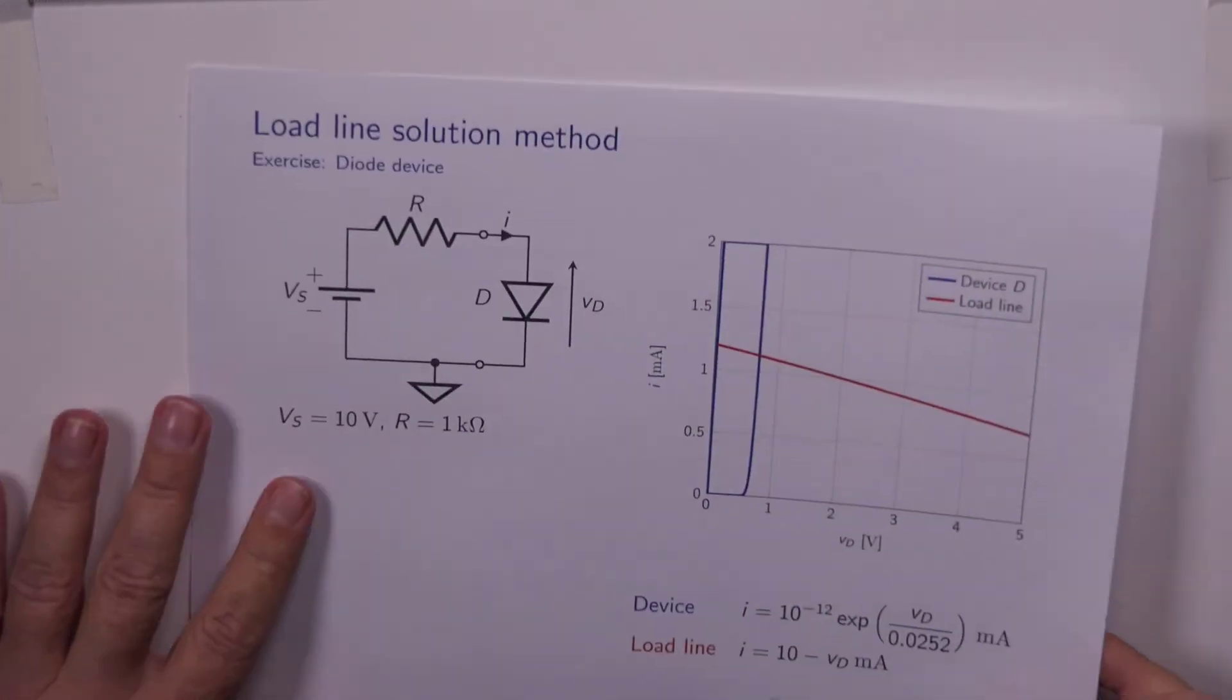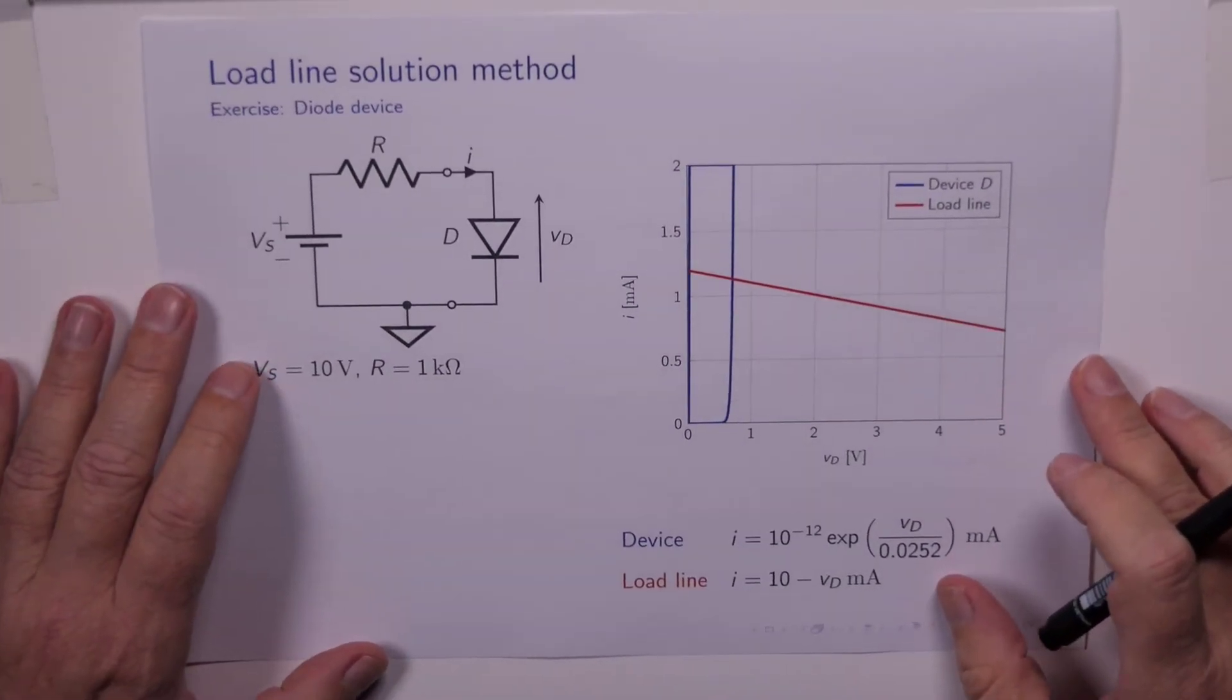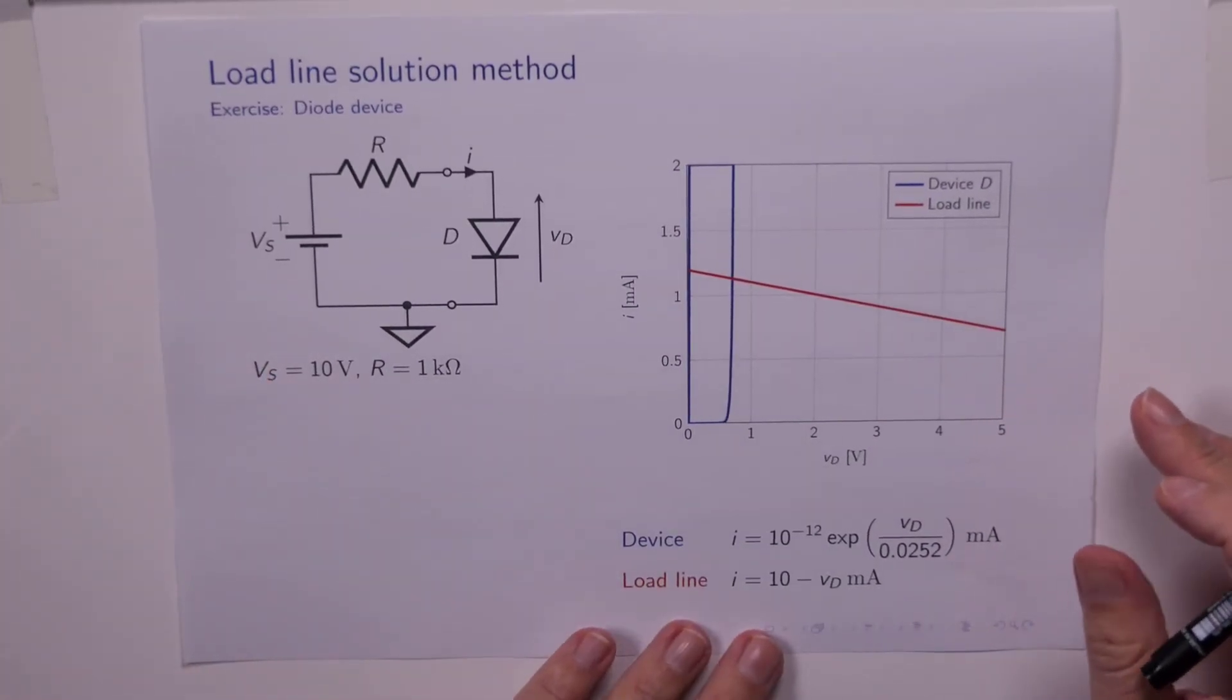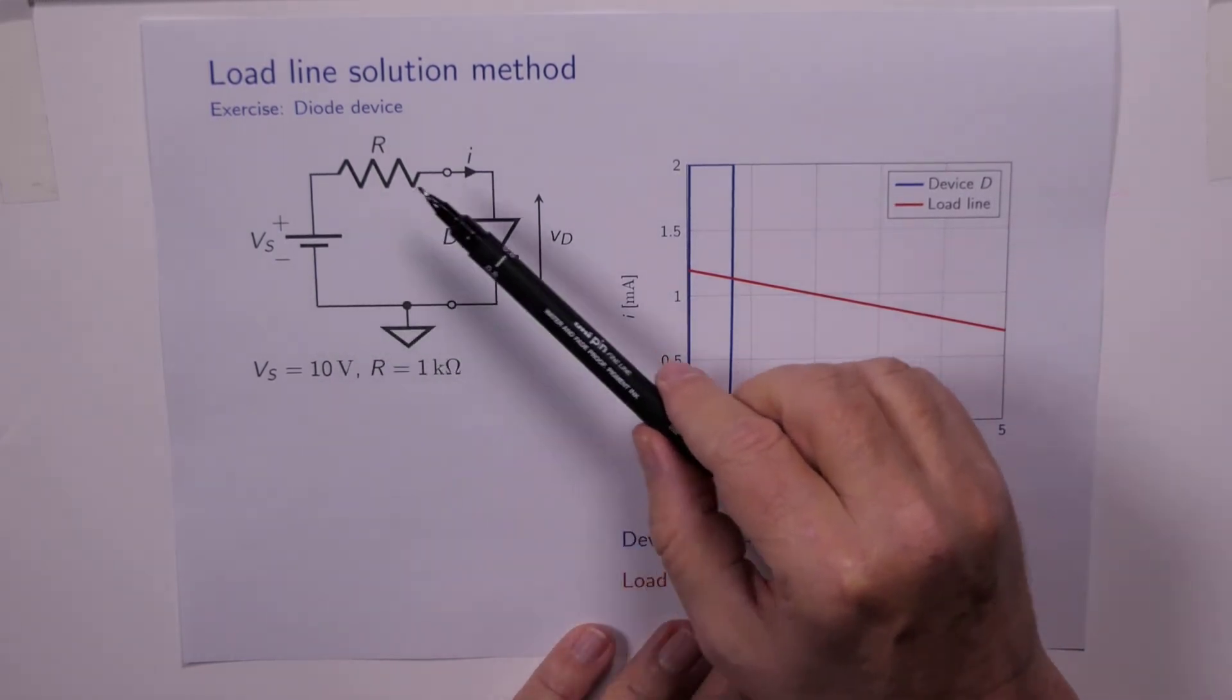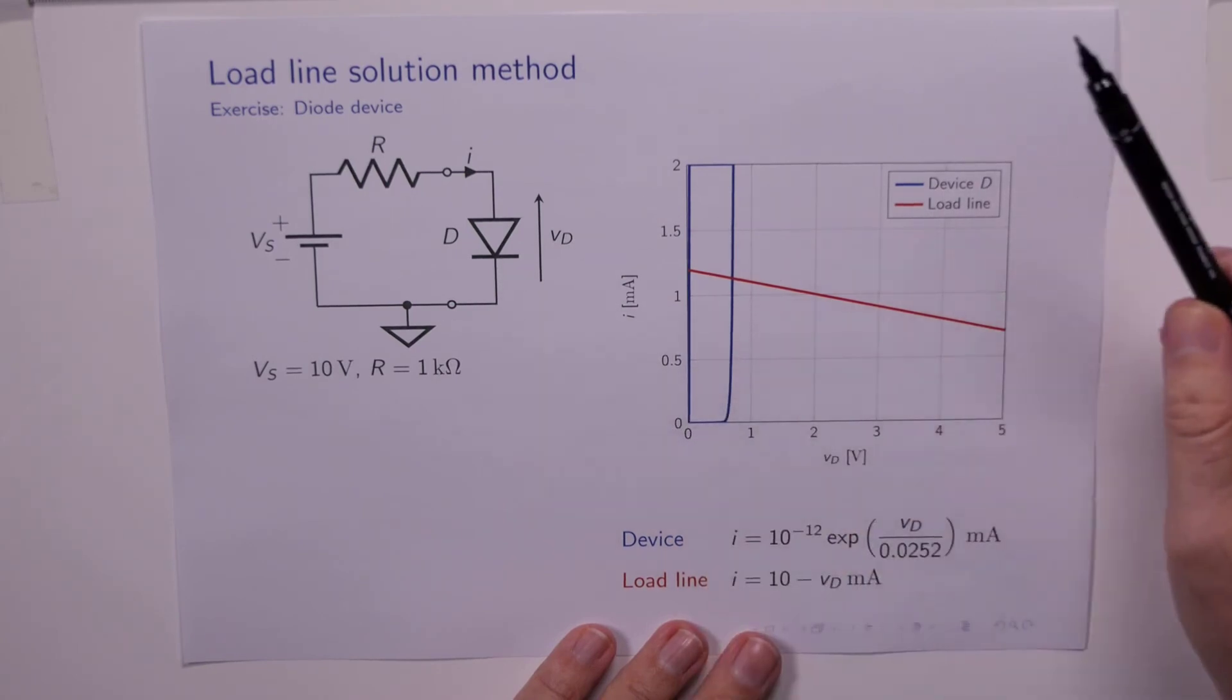And usually when it comes to electronics, we end up with equations that we can't solve. Here's a much more practical example where we've got our circuit again, but this time the device is a diode.